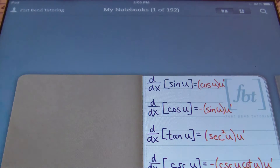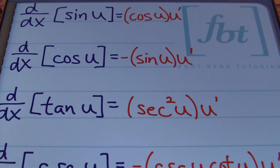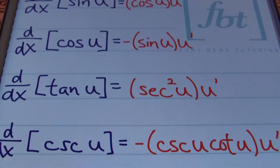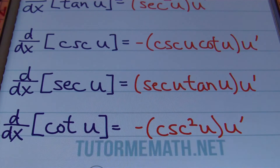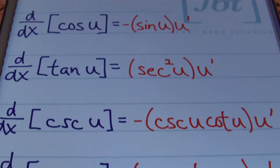We're going to be finding the first derivative of trig functions. On this first page we have a list of your common trigonometric functions and their derivatives. If I'm trying to find the derivative of a sine function, the derivative is going to be the cosine of u times the derivative of u. We have cosine, tan, cosecant, secant, and cotangent — all six trigonometric functions and their derivatives covered.